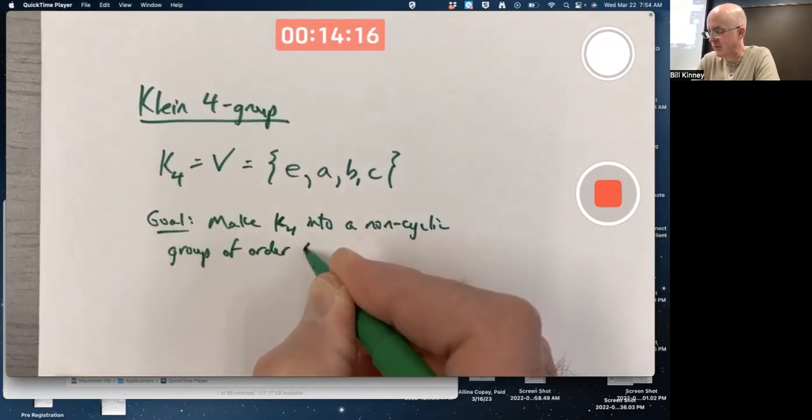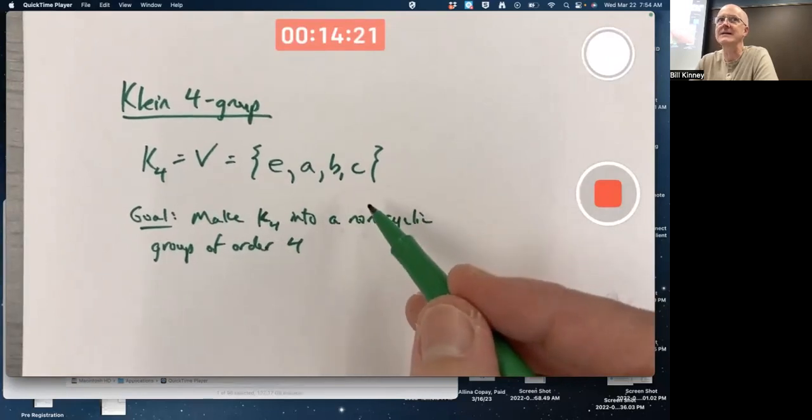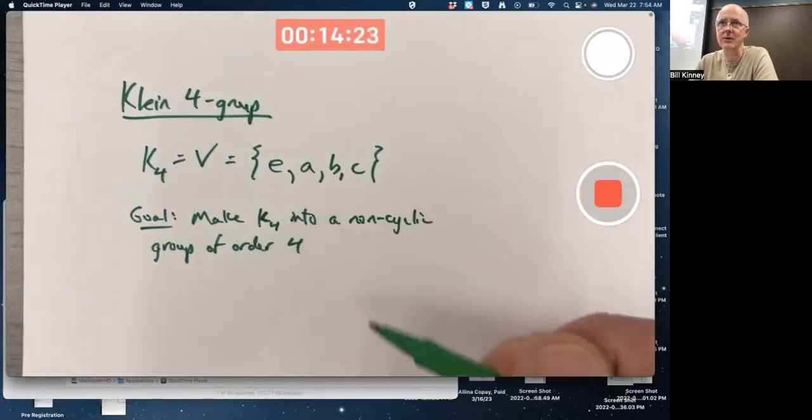Obviously, it's got order four. It's got four elements. I am implicitly assuming all these letters represent distinct elements of the group.